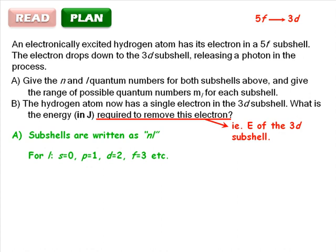Also, remember ML has the range negative L to positive L. For part B, we can use this energy expression to determine the energy of the subshell 3D. Note that the units are already in joules, so no unit conversion is necessary. Now we can solve the problem.